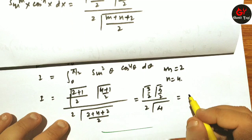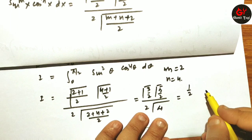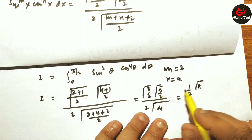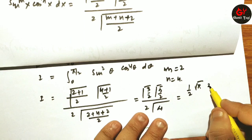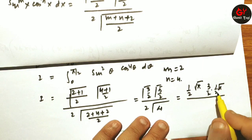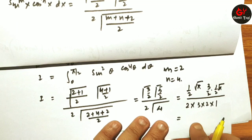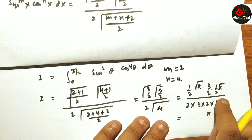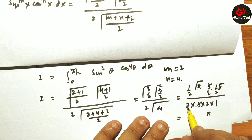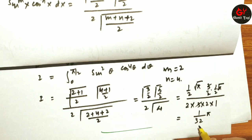Simplifying: Γ(3/2) = (1/2)√π, and Γ(5/2) = (3/2)·(1/2)·√π. Γ(4) = 3! = 6. After cancellation, the result becomes π/32. We have simply learned the application of this Gamma function formula.